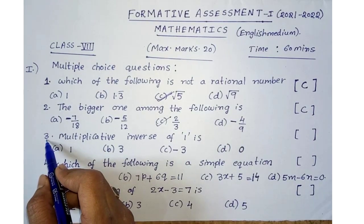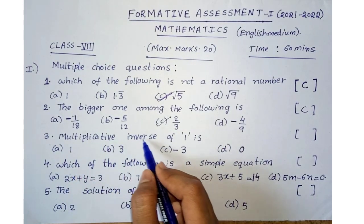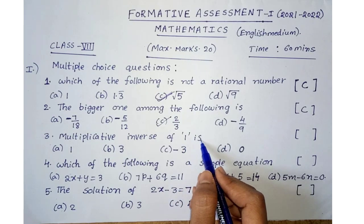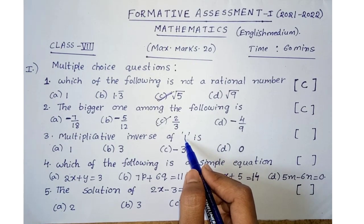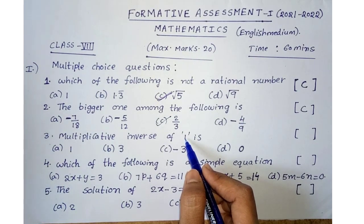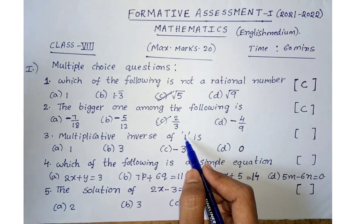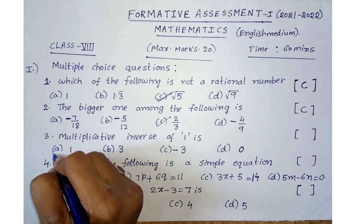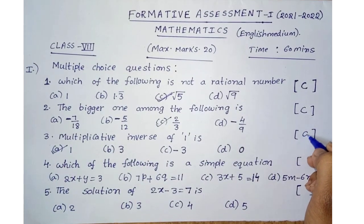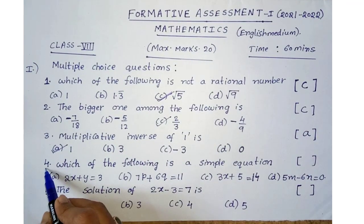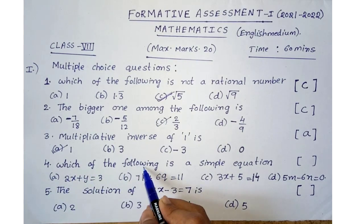Third one: multiplicative inverse of 1 is? The multiplicative inverse means we reverse the given number — swap numerator and denominator. For 1, both numerator and denominator are 1, so the inverse is still 1. The answer is 1, so option A.